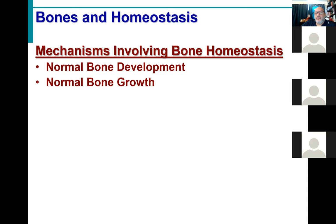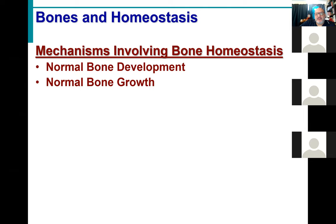We learned two ways to grow bones - length and width. What was the growth process we used to grow bones in length? Interstitial growth. Spectacular. And for growth in width? Appositional growth. Excellent. One of the awesome things about appositional growth is that it also forms our osteons and therefore forms our compact bone.